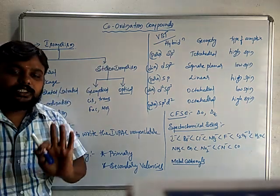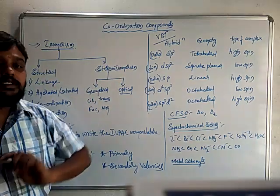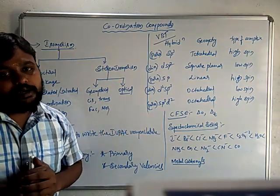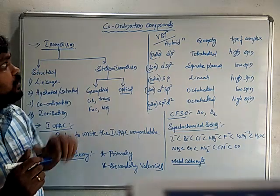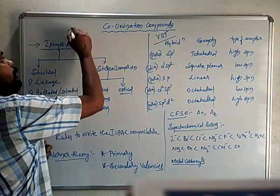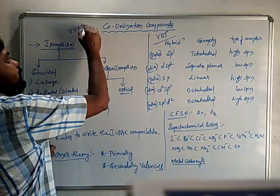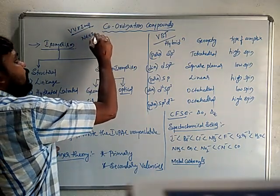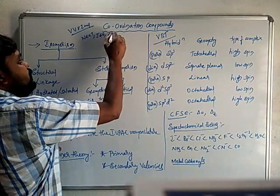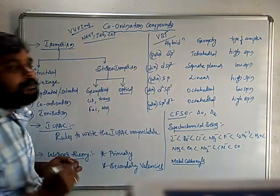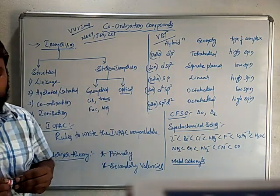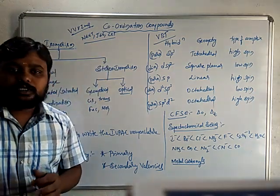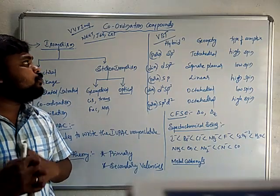The next chapter is Coordination Compounds, which is a continued part of the D and F block elements. Coordination Compounds is very important for your competitive examinations — NEET, JEE, and Common CET. This is also an important chapter in the context of organic chemistry for competitive examinations.